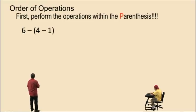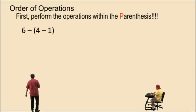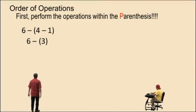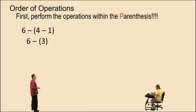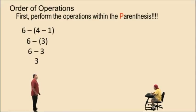So let's look at a problem here: 6 subtract the quantity 4 subtract 1. Notice 4 subtract 1 is in the parentheses. 4 subtract 1 is 3. And bring down our work. Now, when you subtract a positive number, the parentheses are not required. So we'll just write it as 6 subtract 3, which is 3, and that's your answer.